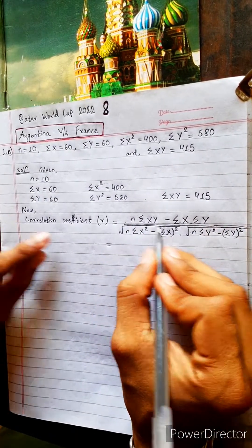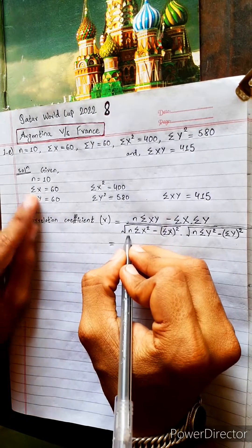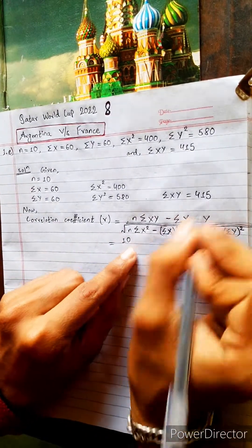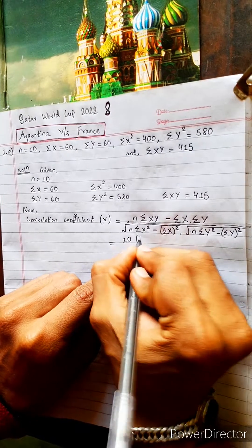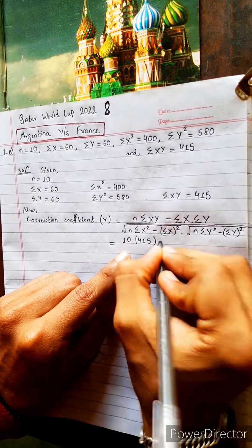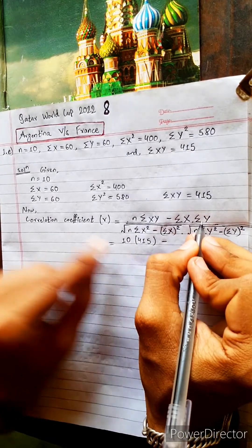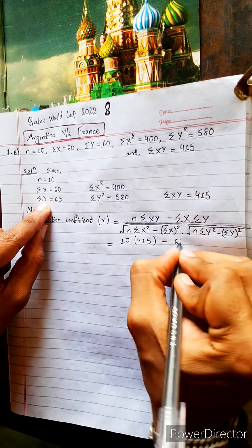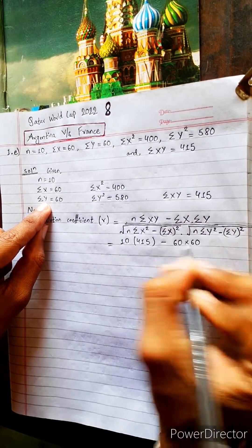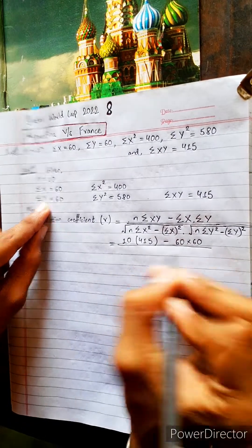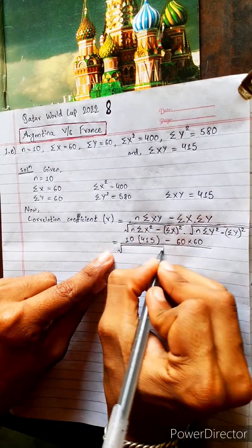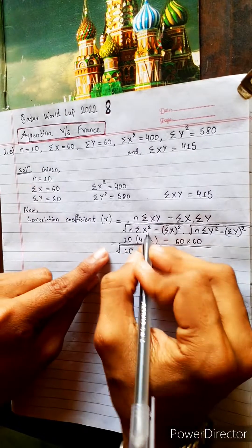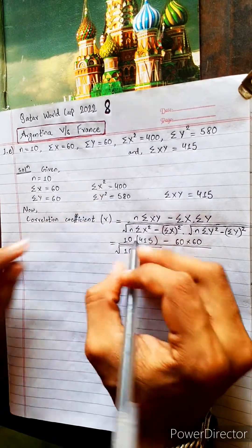Now substituting: summation xy is 415, minus summation x times summation y which is 60 into 60, divided by — under root, n is 10, summation x square is 400.